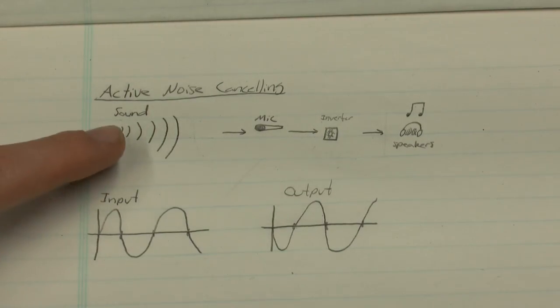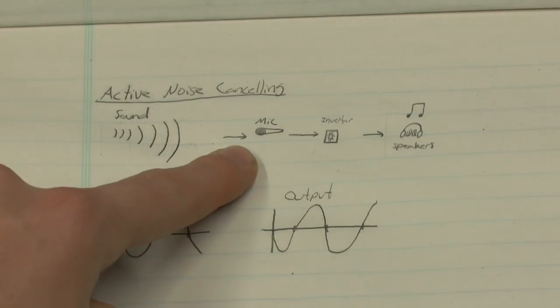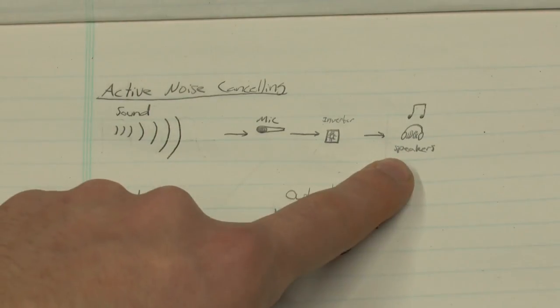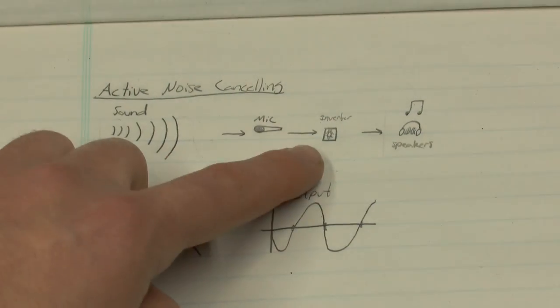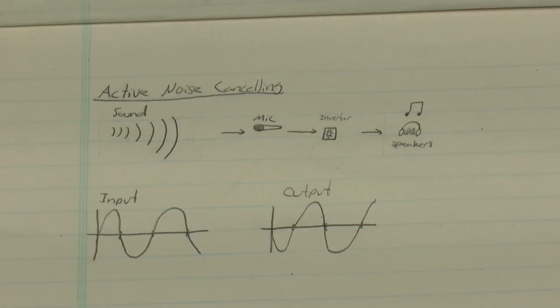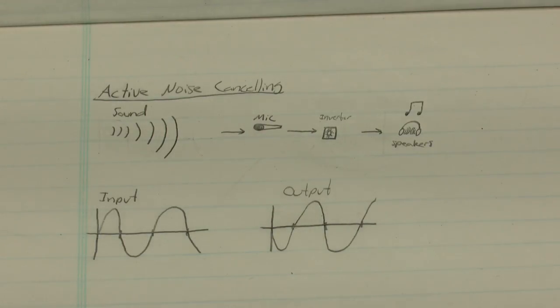I've drawn these pictures. The sound comes in, it goes into a microphone. There is a processor on board which inverts the sound and then it reproduces it through the speakers. So why do we want to invert the sound? When you take two waves and you invert one of them, you get destructive interference.